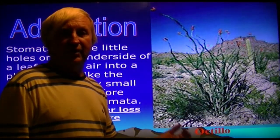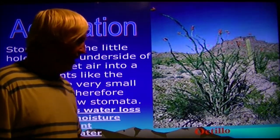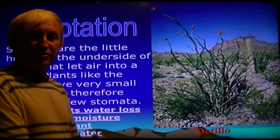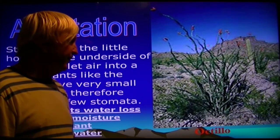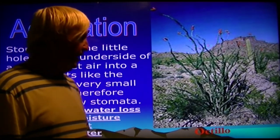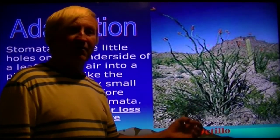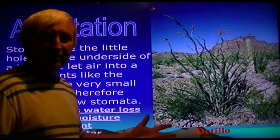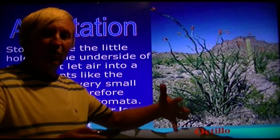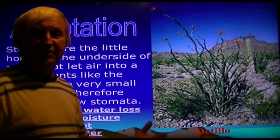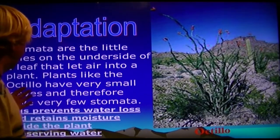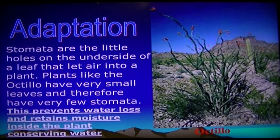Plants use water as a way to cool down, similar to animals sweating. Plants have stomata — in desert plants the stomata are very small. In the tropical rainforest where there's ample moisture, plants have very large stomata and large leaf structures. Desert plants have adapted to the harsh environment with very small stomata, which prevents water loss and retains moisture inside the plant. This is how plants like Ocotillo conserve water.